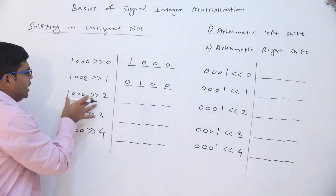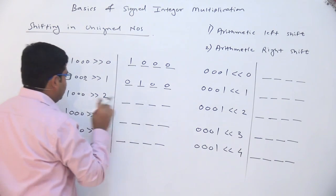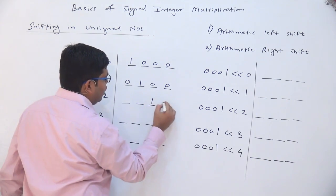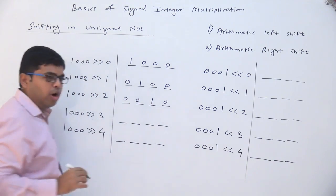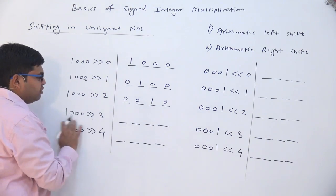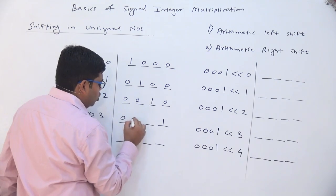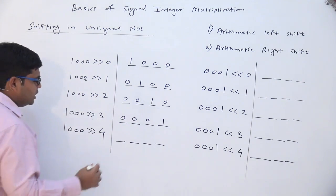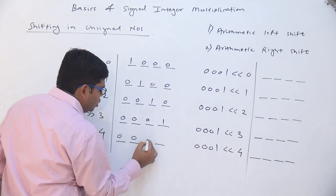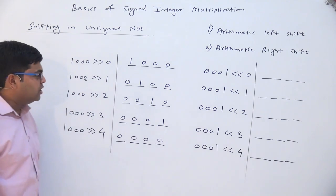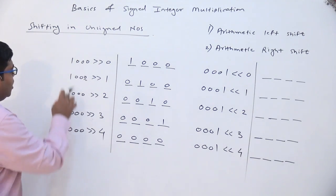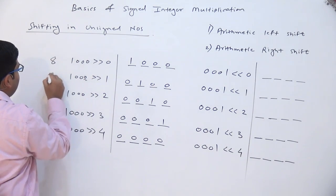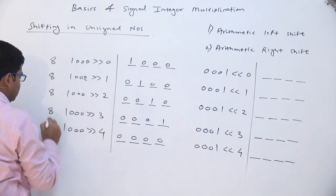This 0 will get truncated and the last place which remains we will fill with 0. When I shift by 2 places, this 1 will come 2 places further and it will become like 1 0, and these 2 places we will copy with 0. Similarly, right shifting by 3 places will look like 0 0 0 0 0 0 1 and right shifting by 4 places will look like 0 0 0 0.